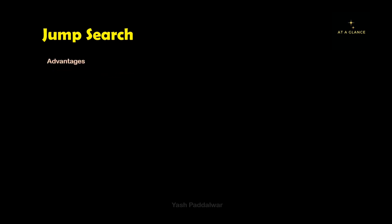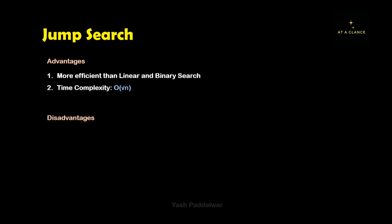Now let's have a look at the advantages of jump search algorithm. The first advantage is that it is more efficient than linear and binary search as you can find the element in fewer iterations. The time complexity is O(√n). The disadvantages are that the data needs to be sorted otherwise it won't work, and it is complex to implement when compared to linear search.